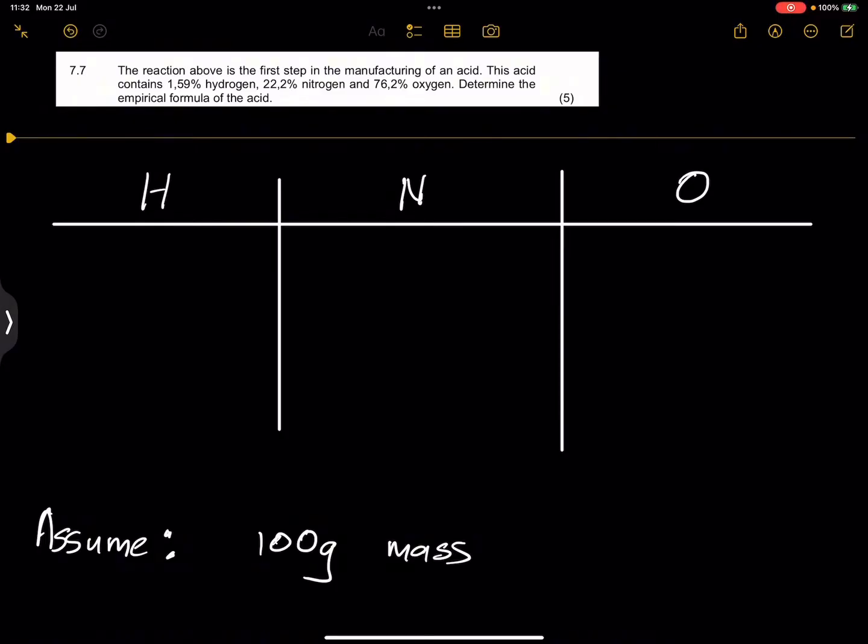So if we had 100 grams of mass and you've given us 1.59%, they said the acid contains 1.59% hydrogen, which means the mass of hydrogen would be 1.59 grams. This would be the mass. The mass of nitrogen automatically makes this 22.2 grams of nitrogen if you had 100 grams, as well as 76.2 grams of oxygen.